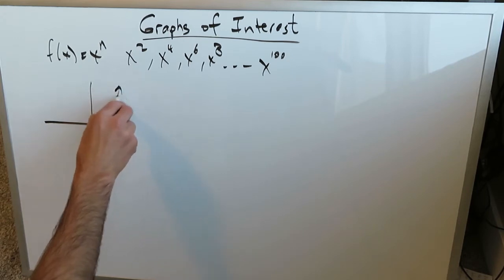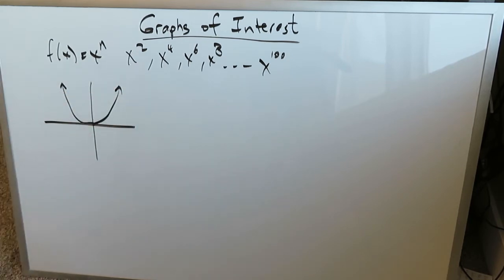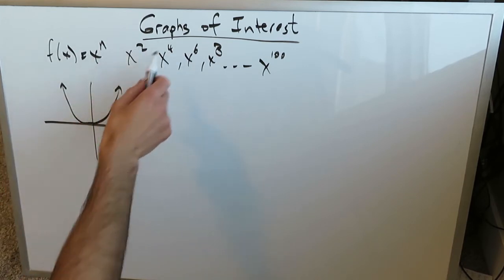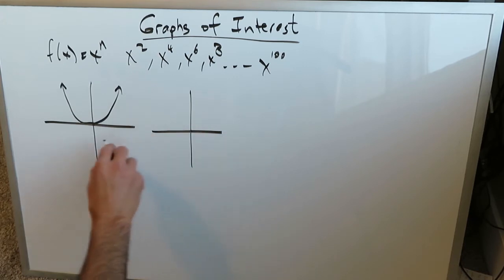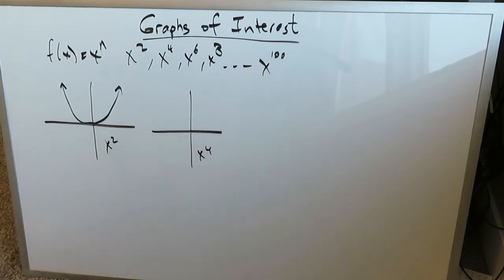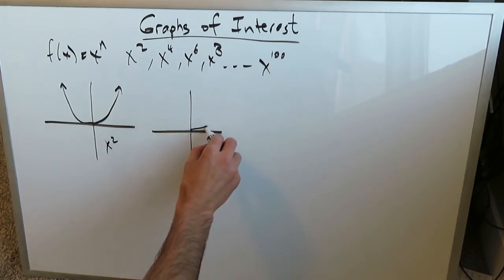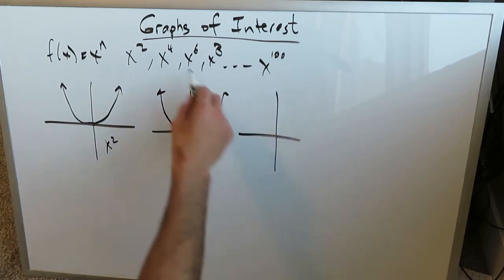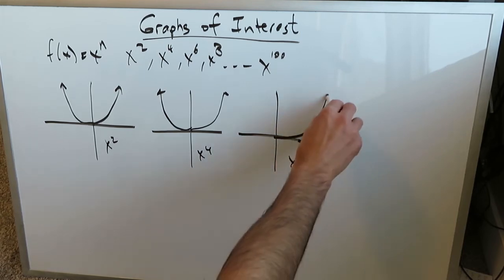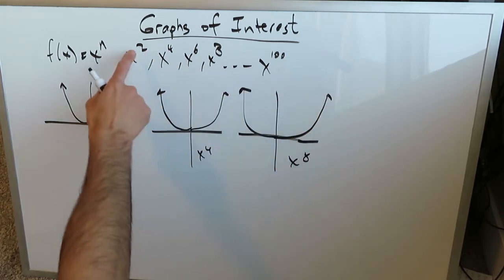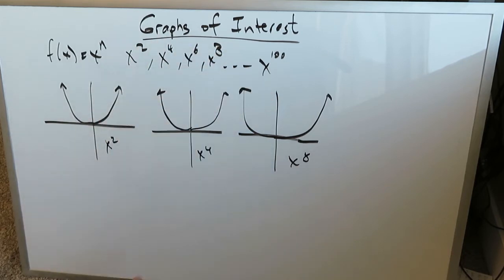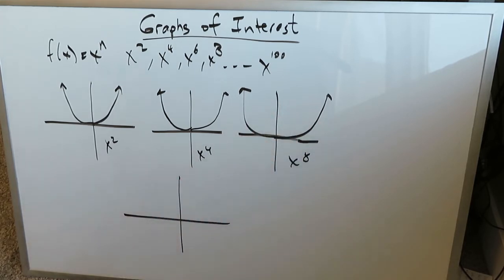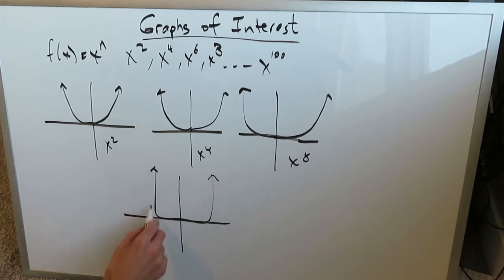These are types of graphs you should be relatively familiar with. You would always start with something like x squared — the basic standard parabola. As you increase the exponent from squared up to 4, the graph develops more of a bowing of your curve. We can even skip x to the 6 and go to x to the 8, and you'd have a bit more of a bowing effect. As you increase the power toward 100, you eventually get a bowing and vertical extension.